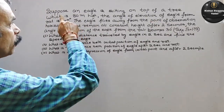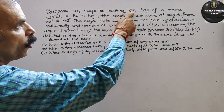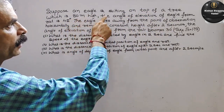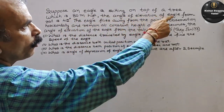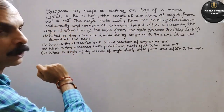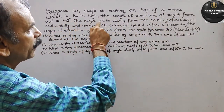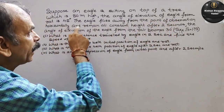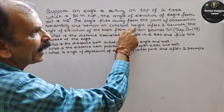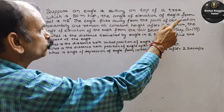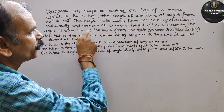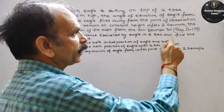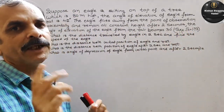Aapka question hai: suppose an eagle is sitting on top of a tree which is 80 meters high. The angle of elevation of eagle from rat is 45 degrees. The eagle flies away from the point of observation horizontally and remains at constant height. After two seconds, the angle of elevation of the eagle from rat becomes 30 degrees. Take root 3 equal to 1.73.